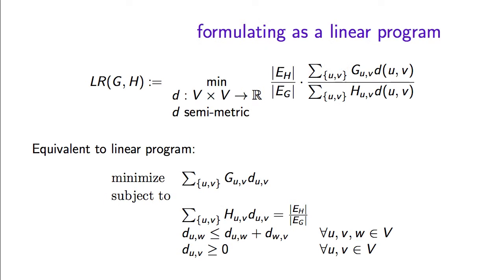Once we formulate the latent row relaxation as a linear program, we can find an optimum solution through a linear programming solver. This gives us a collection of distances, one for each pair of vertices, which minimizes this ratio. Given this distance function, we would like to find a cut of small sparsity.